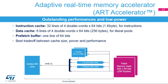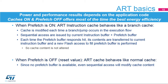If the data is not in the current buffer, it is read from the prefetch buffer if present, or from the instruction cache if there is a cache hit. Otherwise, the instruction cache behaves differently depending on whether the prefetch buffer is enabled. If the prefetch buffer is enabled, the ART instruction cache behaves like a branch cache — the cache is modified each time a branch or jump occurs. Sequential accesses are issued by the current instruction buffer and the prefetch buffer. When the prefetch buffer hits, its contents are transferred to the current instruction buffer and a new flash access fills the prefetch buffer; the cache content is not altered.